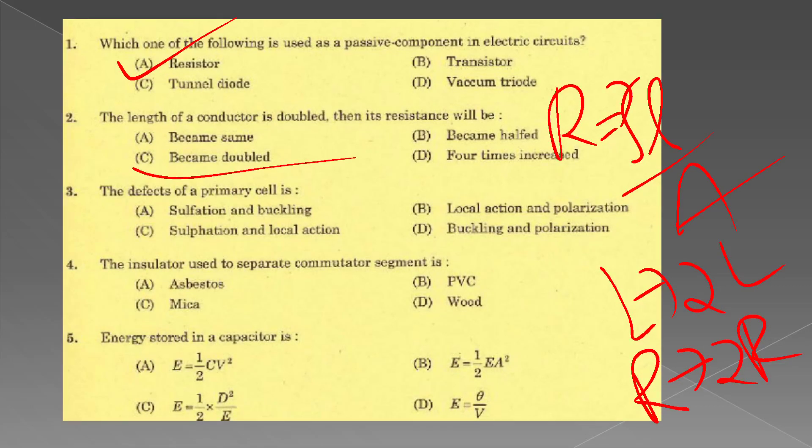The defect of a primary cell. Primary cell defects are local action and polarization.